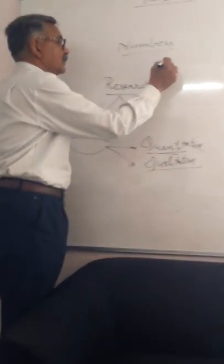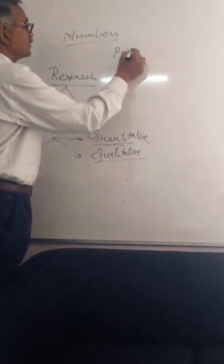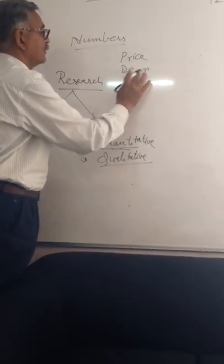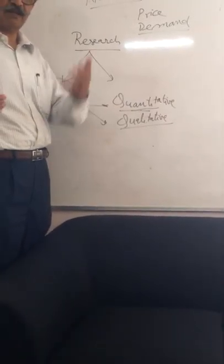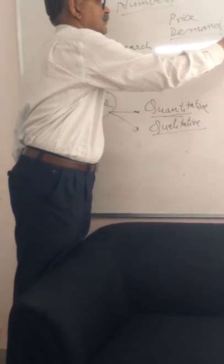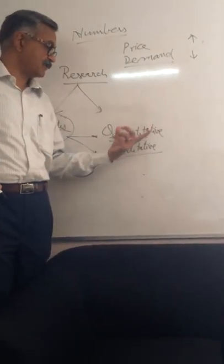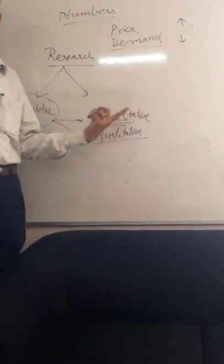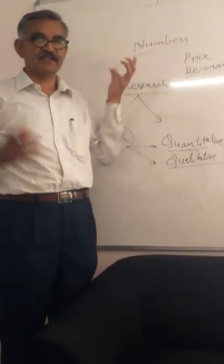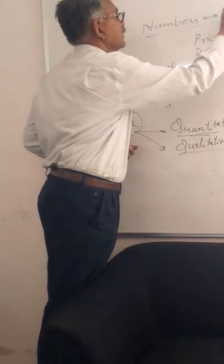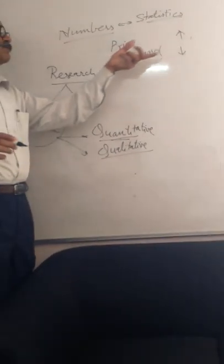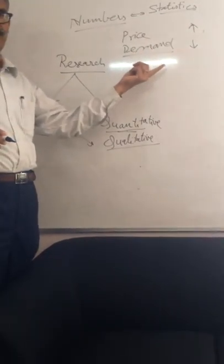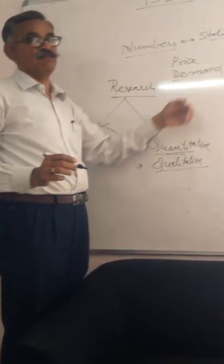For example, if we are talking about two variables — let us say there is a variable of price and demand — and we say when price rises, demand falls. This research can very well be classified as quantitative research. We can carry out this research using numbers and statistics. Through statistical analysis, we can prove that whenever price rises, demand falls, or in reverse, whenever price falls, demand rises.